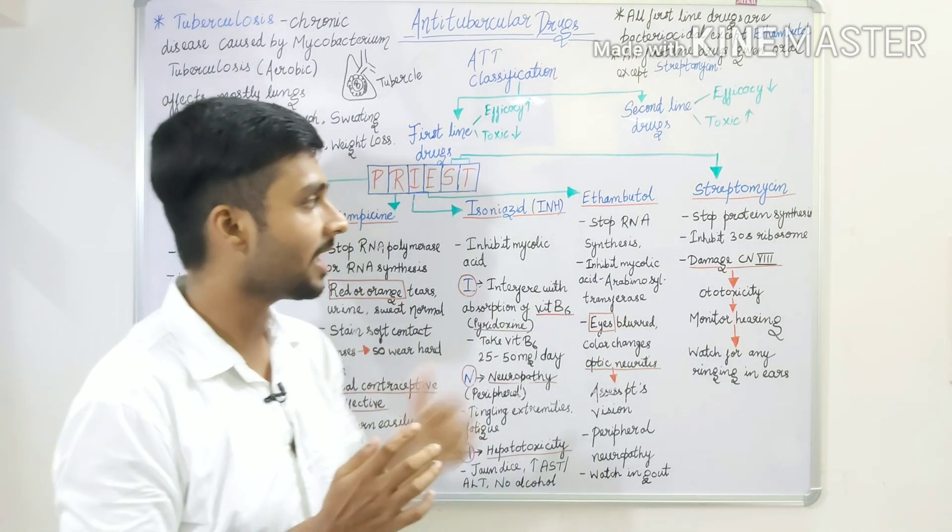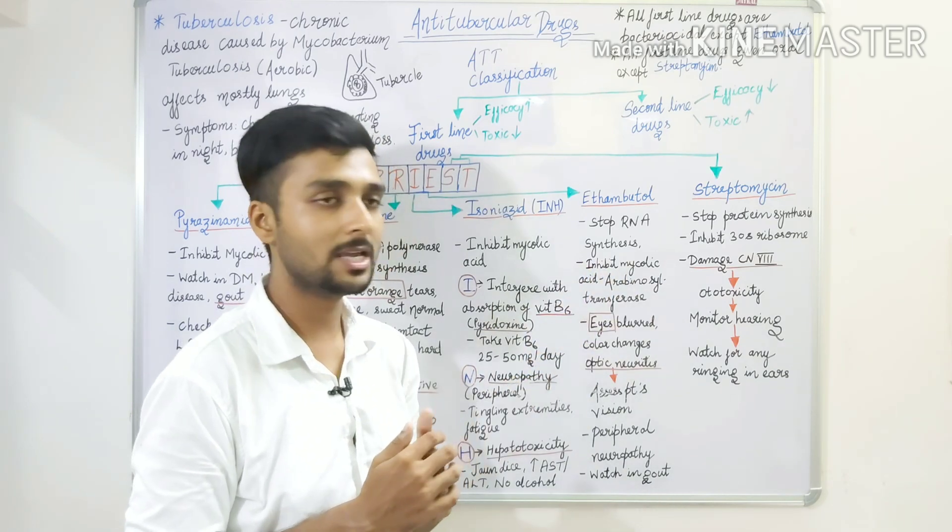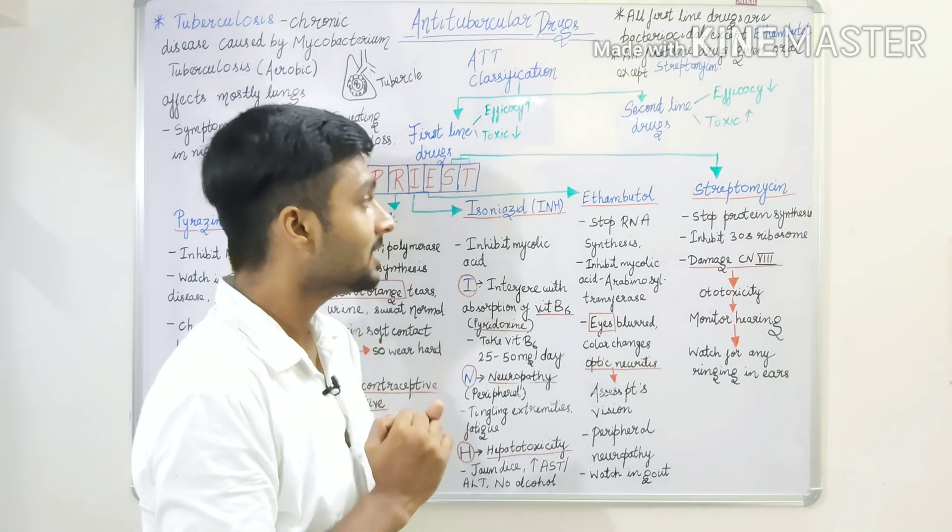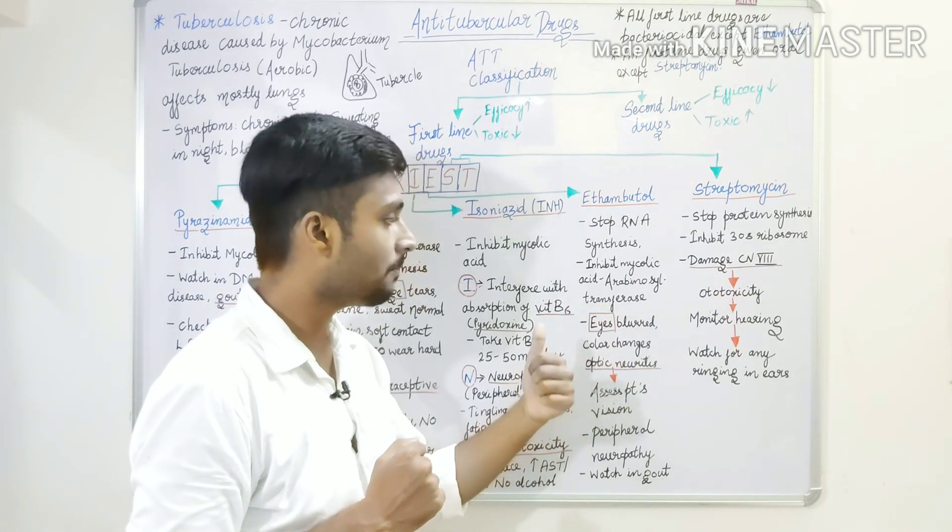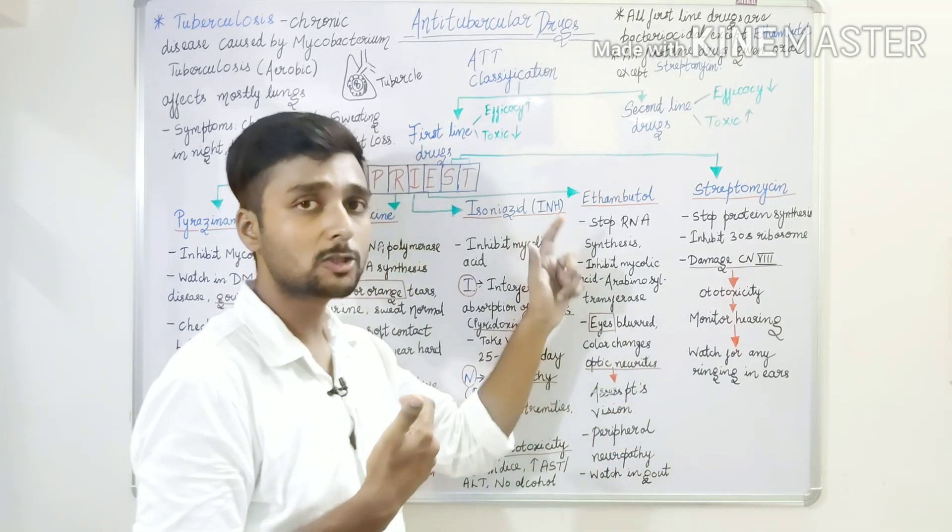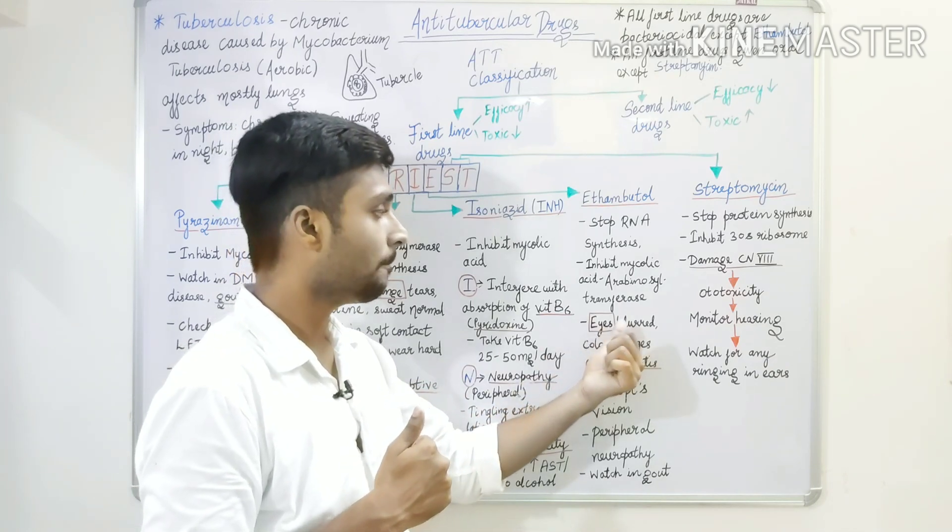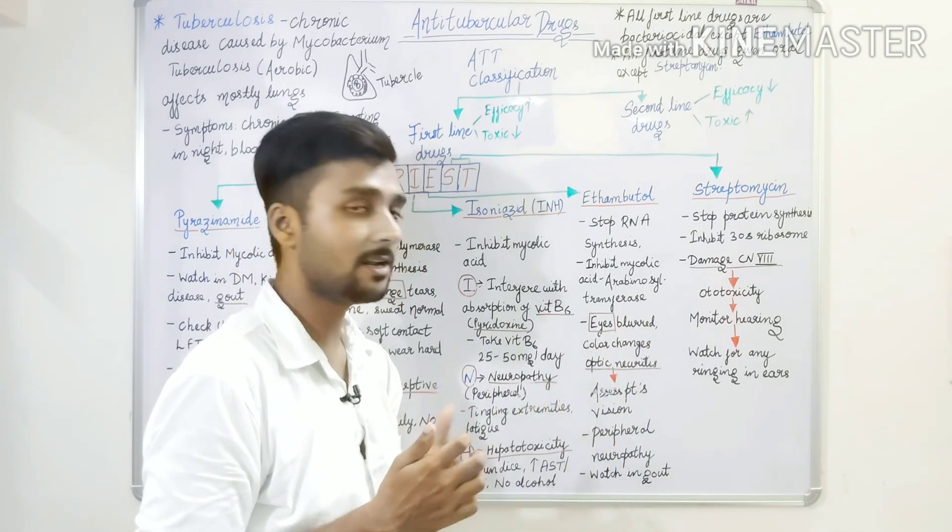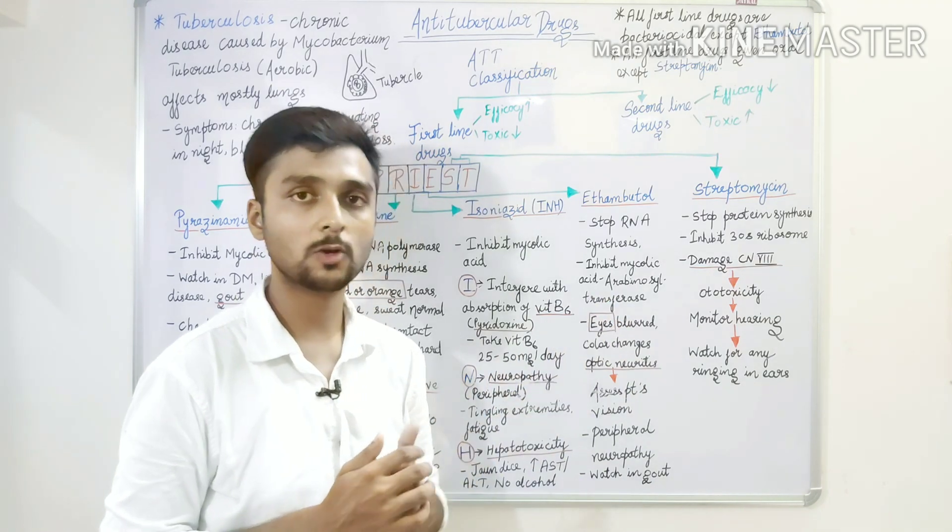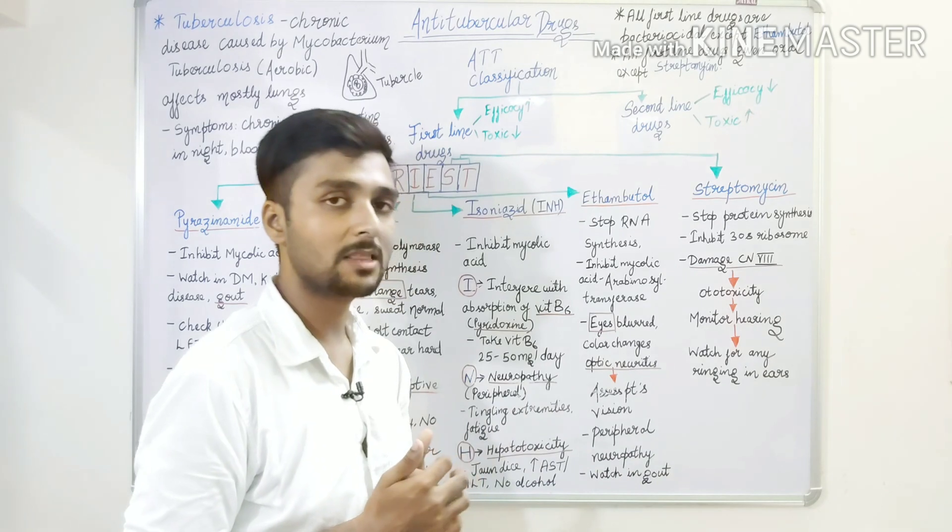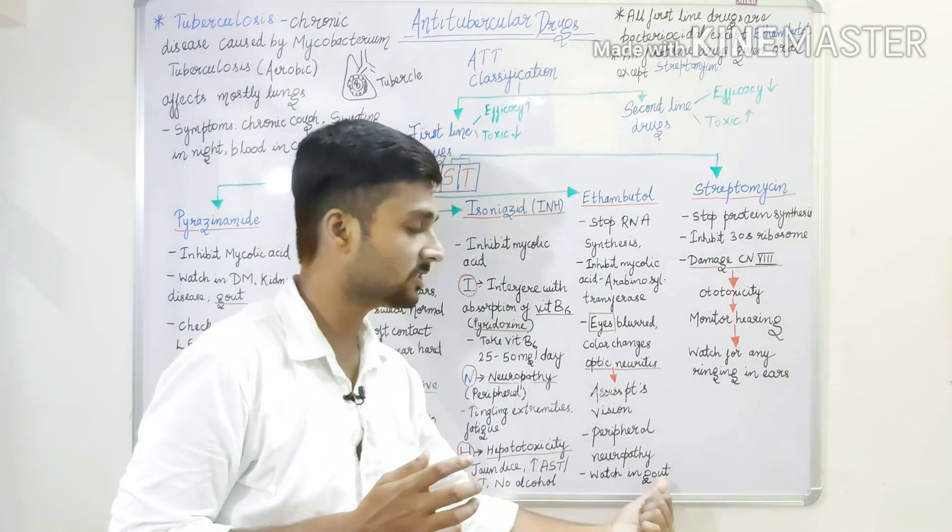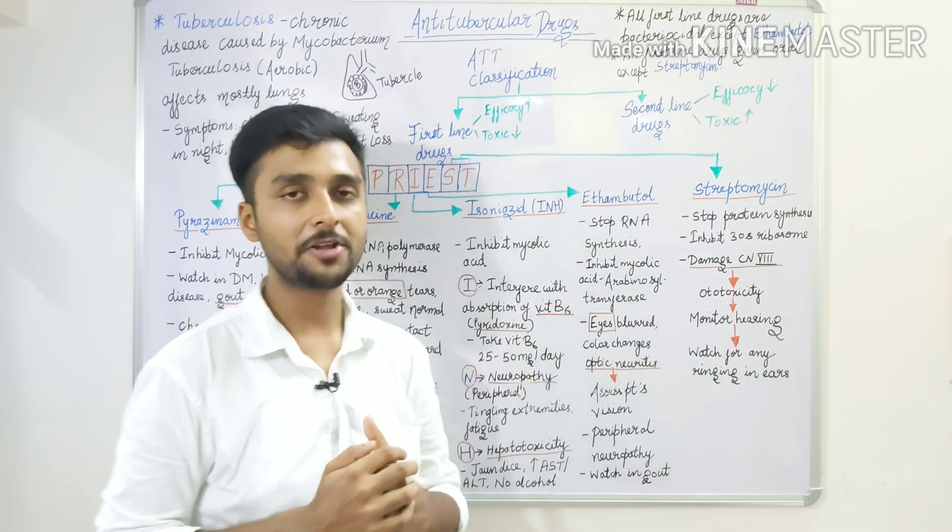Next, Ethambutol. It stops RNA synthesis. This also inhibits mycolic acid, or arabinosyl transferase enzyme, and bacteria will not grow further. After taking this drug, we have to see for optic nerve inflammation, called optic neuritis, which is a toxic effect. As a symptom, there will be blurring in vision or color changes in the eye. So, we have to assess the patient's vision. If we see something like this, we have to immediately inform doctors. Peripheral neuropathy can also occur. And this drug will increase the uric acid level, so if the patient has gout, we have to monitor.